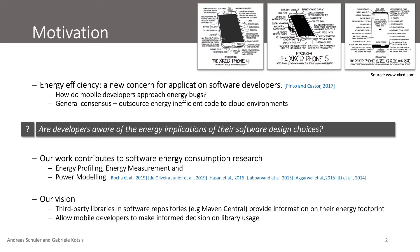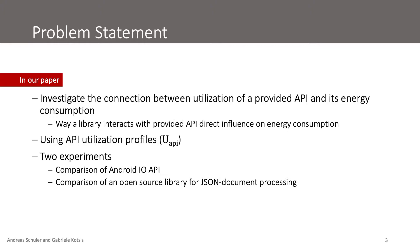To lay the foundation for our vision, in our paper we investigated a novel approach to software energy consumption profiling. In essence, for our ASAM 2020 paper, we investigate the connection between the utilization of the Android API through third-party libraries and their energy consumption. Our approach stems from the assumption that the way a particular library or application interacts with its underlying API has direct influence on its energy consumption. Therefore, we introduce API utilization profiles, which stem from this general assumption.